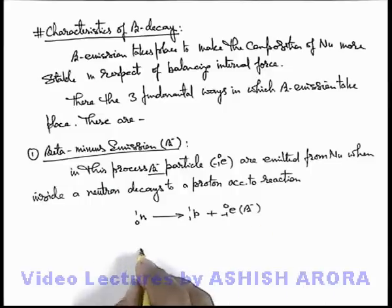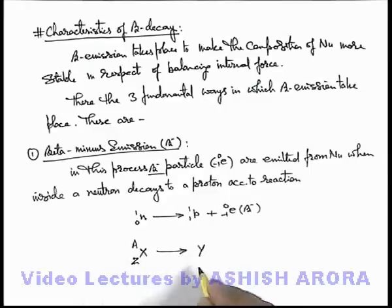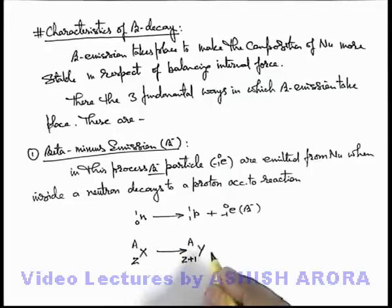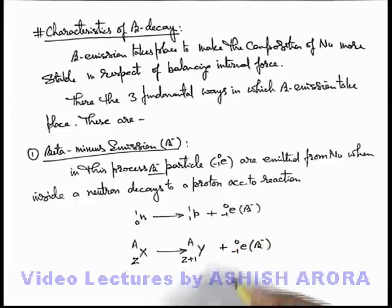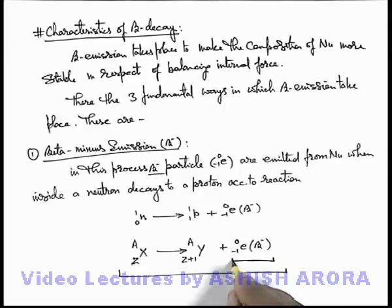At the nuclear level, if the parent nucleus was X having atomic number Z and mass number A, it decays to the daughter nucleus Y, where when a proton is gained its charge number is increased by 1 but there is no effect on its mass, and an electron or a beta minus particle is emitted. This is the way the beta minus reaction is written and how this radioactive radiation of a beta minus particle is emitted from the nucleus.